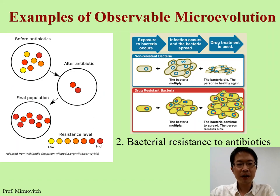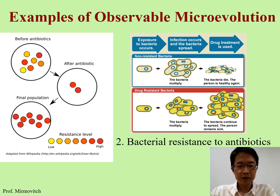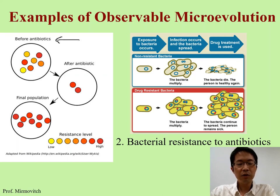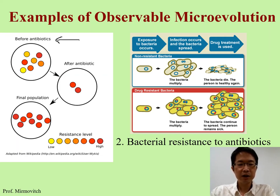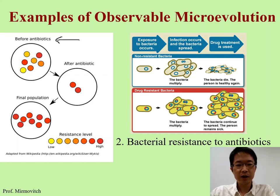The second example is antibiotic-resistant bacteria. Many of us have heard about this — there are a lot of bacteria that are resistant to antibiotics. Originally we have a population or colony of bacteria, then we apply antibiotics. Antibiotics are like pesticides — they will kill most of the bacteria, but some bacteria may live and survive the antibiotics.